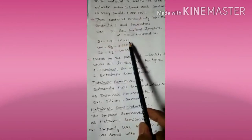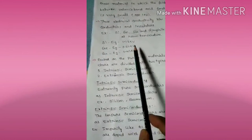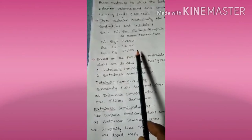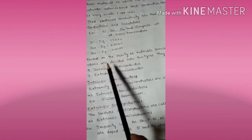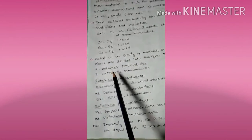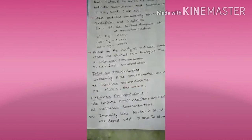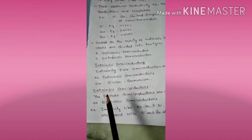The energy gap for silicon is 1.2 electron volts, for germanium it is 0.67 electron volts, and for gallium it is 1.4 electron volts. Based on the purity of the materials, semiconductors are divided into two types: intrinsic semiconductors and extrinsic semiconductors. Extremely pure semiconductors are called intrinsic semiconductors — examples include silicon and germanium.